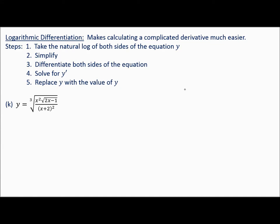The steps for logarithmic differentiation: first, take the natural log of both sides. Second, simplify — expand the expression. Third, differentiate both sides of the equation. Fourth, solve for y prime and replace y with the original value of y. You'll see what I mean in the middle of the problem.